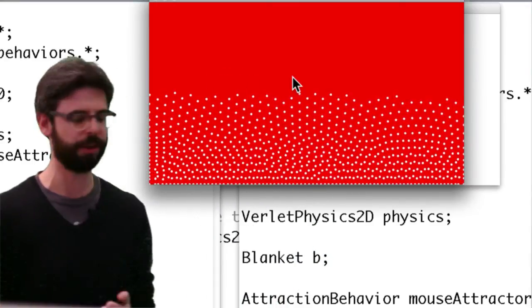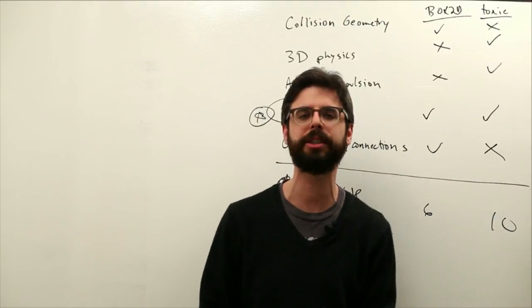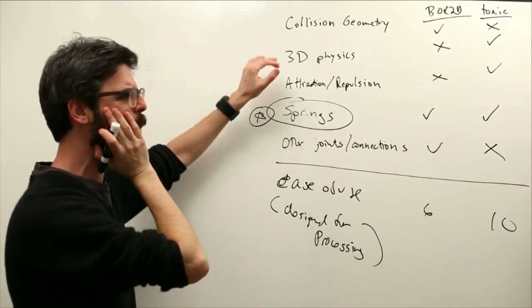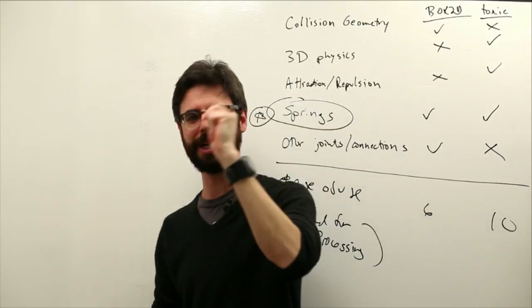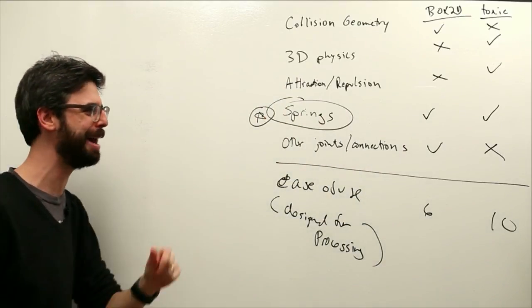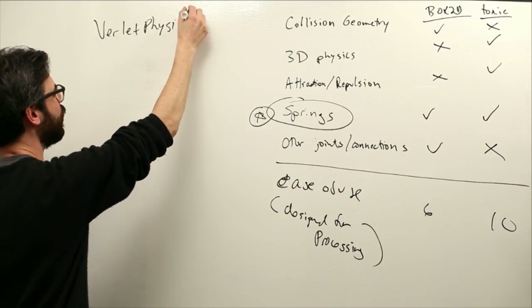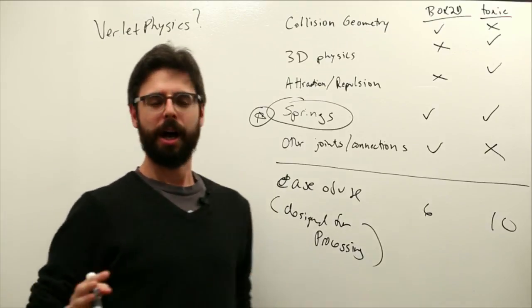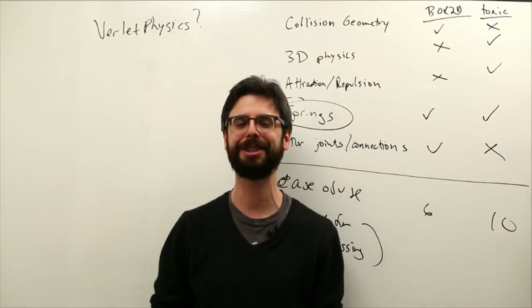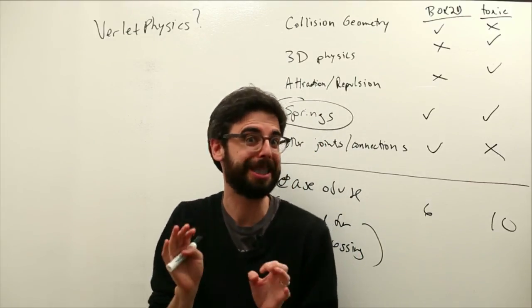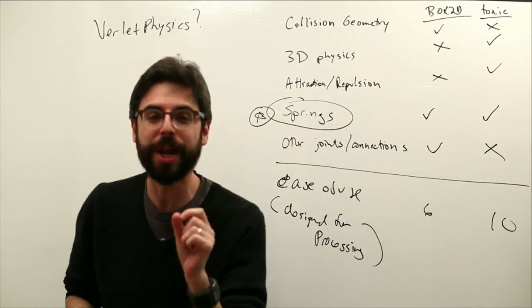So the main thing we have to get to in these videos, which I'm going to start doing in the next one, is the details of how to actually use ToxicLibs. I think there's one last point that maybe is worth making in this video, that's now about 8 minutes long, hopefully we can get this done before 10 minutes. Is, what the hell is this Verlet physics thing anyway? Like, why is it called Verlet physics? Deep breath. Okay, so here's the thing.